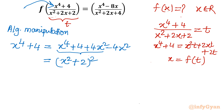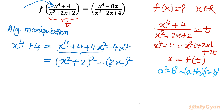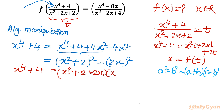Let us check: (a + b)² gives x⁴ from (x²)², 4 from 2², and 4x² from 2ab. Then minus 4x² can be written as (2x)². Now we apply the difference of two squares identity: a² - b² = (a+b)(a-b). So x⁴ + 4 = (x² + 2 + 2x)(x² + 2 - 2x).